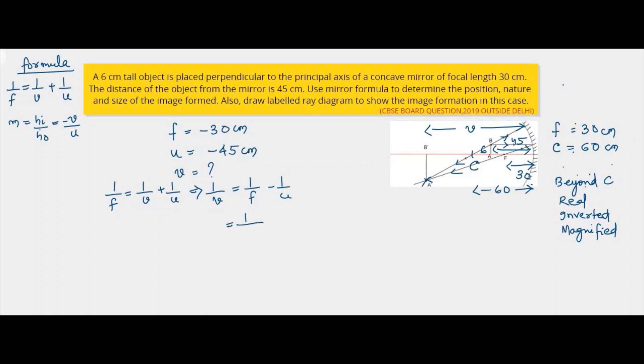Substituting the values, 1 by F, F is minus 30 minus of U is minus 45, which is minus 1 by 30 plus 1 by 45. If we take the LCM, like I always say, do not multiply here because we will easily reduce it after getting the answer in the form of a fraction.